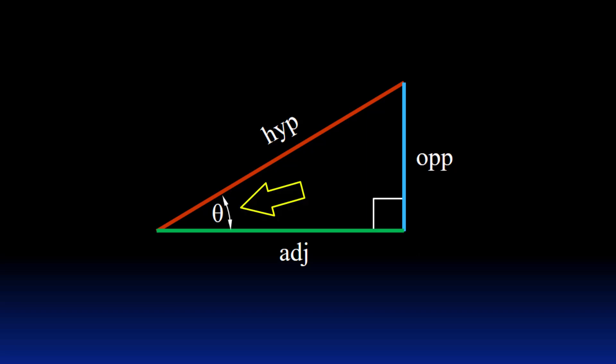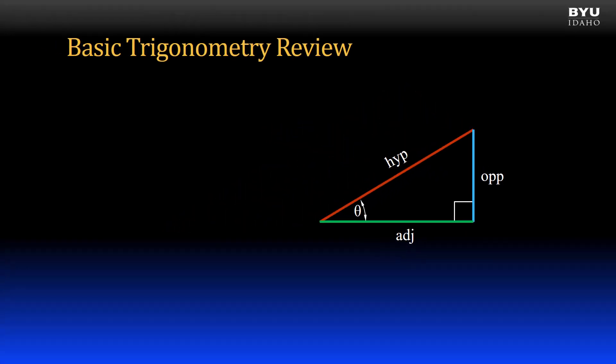The opposite and adjacent sides are relative to a given angle. If we consider the angle shown as theta, the opposite side is the side opposite of theta, and the adjacent side is the side that makes the angle theta with the hypotenuse. With these relationships, we can state that the tangent of theta is a ratio of the opposite side length to the adjacent side length.